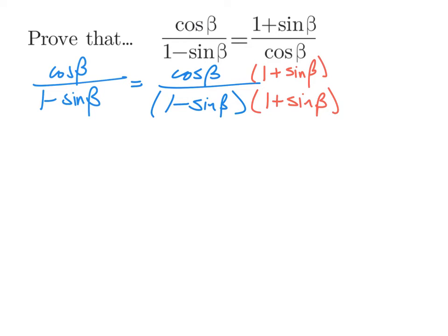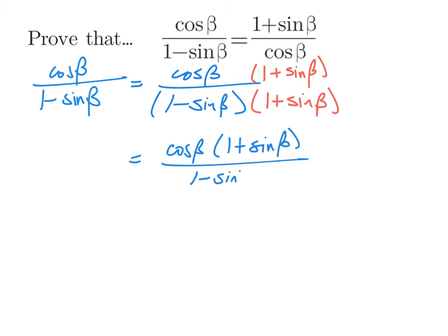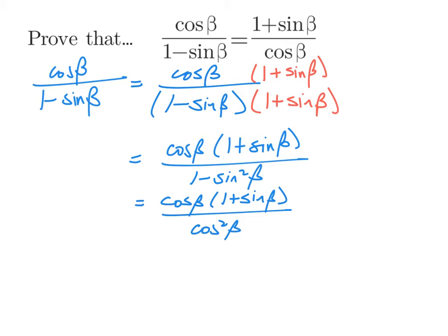When we do that multiplication, I'll leave the numerator as cosine times 1 plus sine. Multiplying out the denominator gives us the difference of two squares: 1 minus sine squared beta. Now we can apply the Pythagorean identity — 1 minus sine squared is cosine squared. So the numerator stays the same, and since we have a factor of cosine in both numerator and denominator, those cancel, leaving us with 1 plus sine over cosine, which is the other side of our identity.